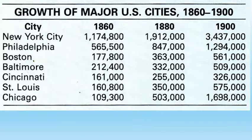Major U.S. city growth can be seen in population charts. New York by 1860 had 1.1 million, then 1.9 million, and by 1900 an impressive 3.4 million. Not far behind was Philadelphia, growing from 565,000 to 847,000 to 1.2 million, then Boston, Baltimore, and Cincinnati. Between 1880 and 1900, there was phenomenal, fantastic growth in urbanization in the United States.